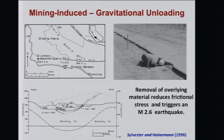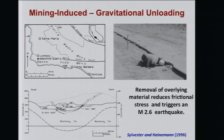Another example of mining-induced earthquakes due to gravitational unloading is from California. Near Lompoc, there is a diatomite quarry — the stuff you put in your pool filter. They basically bulldoze and collect it, relieving the downward gravitational force. At some point that reduction in the pinning force is enough to allow the fault to slip. Here's a small reverse fault that formed in diatomite — white material — manifested as a magnitude 2.6 earthquake. Not hazardous, but it illustrates that you can induce earthquakes through this mechanism. This quarry has generated at least four similar earthquakes.